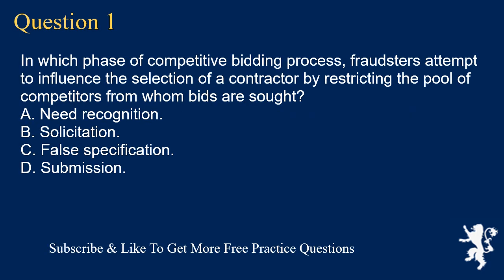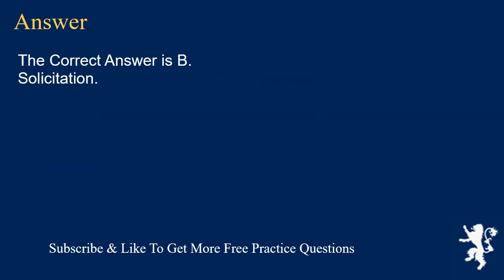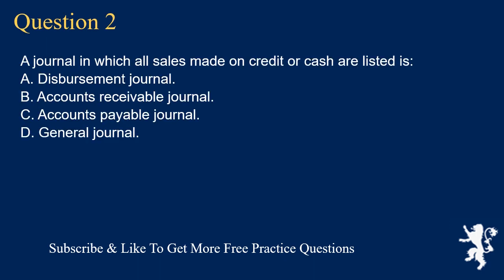Question 1: In which phase of the competitive bidding process do fraudsters attempt to influence the selection of a contractor by restricting the pool of competitors from whom bids are sought? A. Need recognition. B. Solicitation. C. False specification. D. Submission. The correct answer is B. Solicitation.